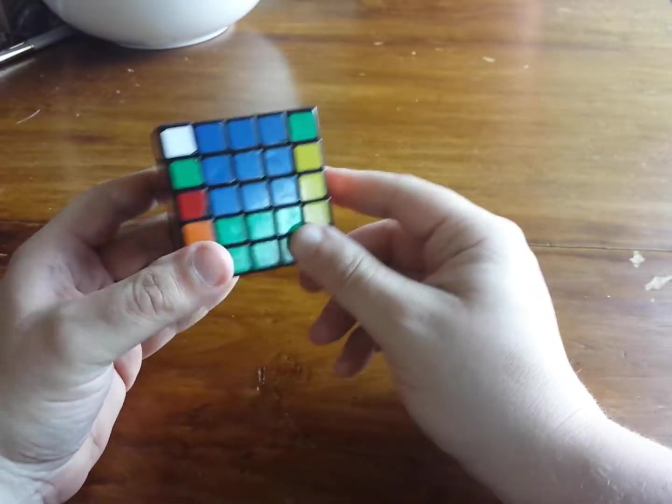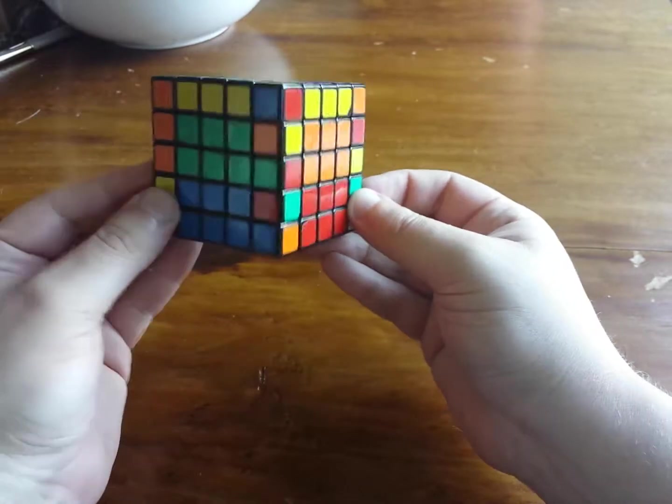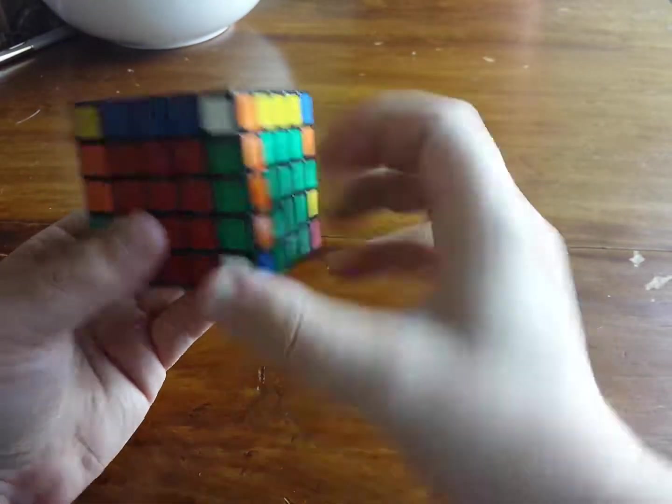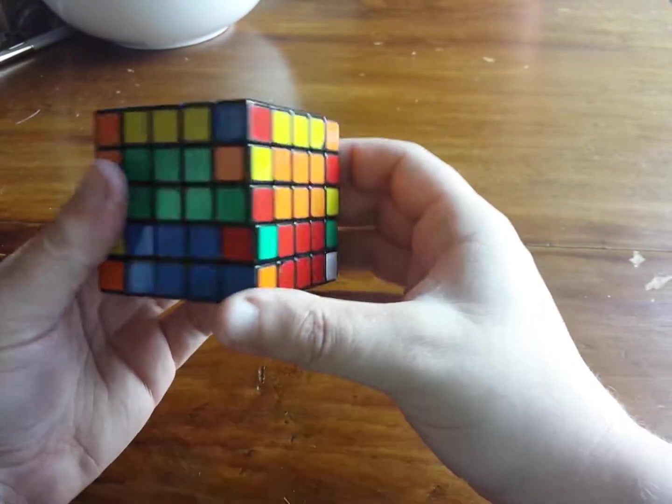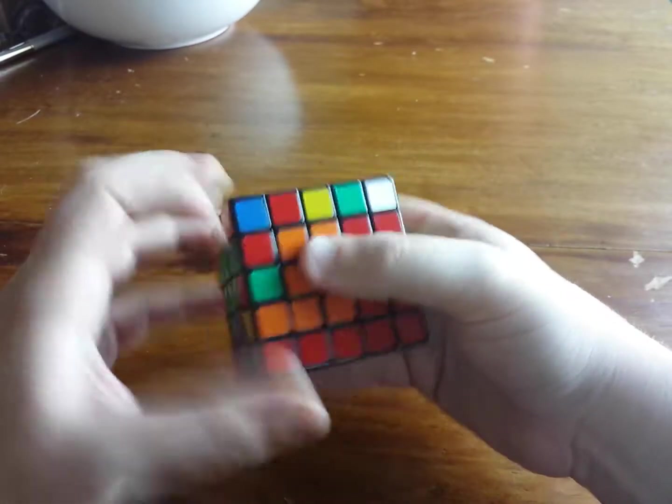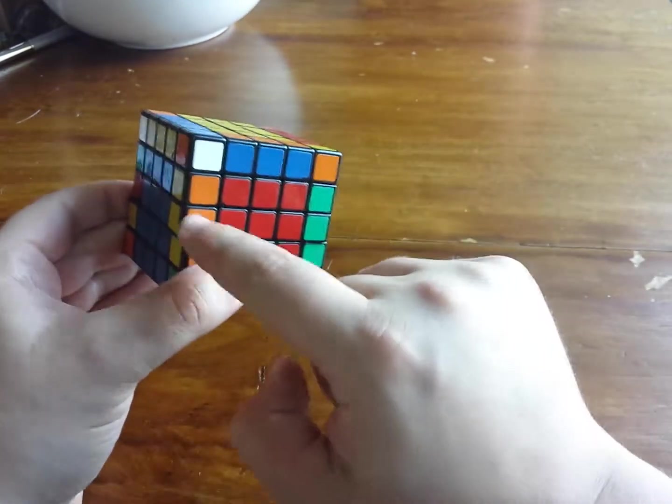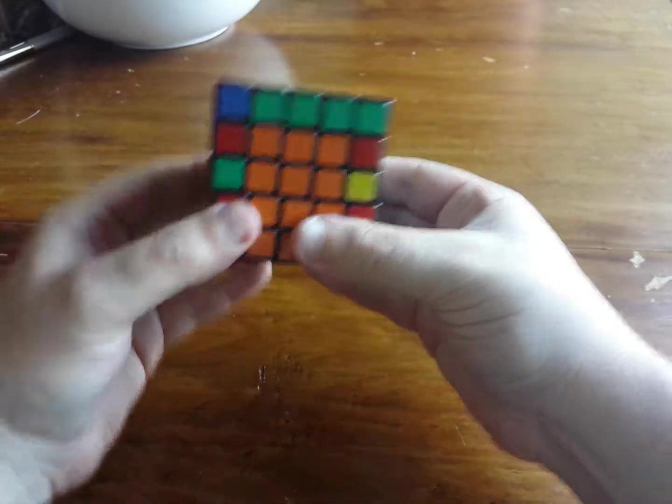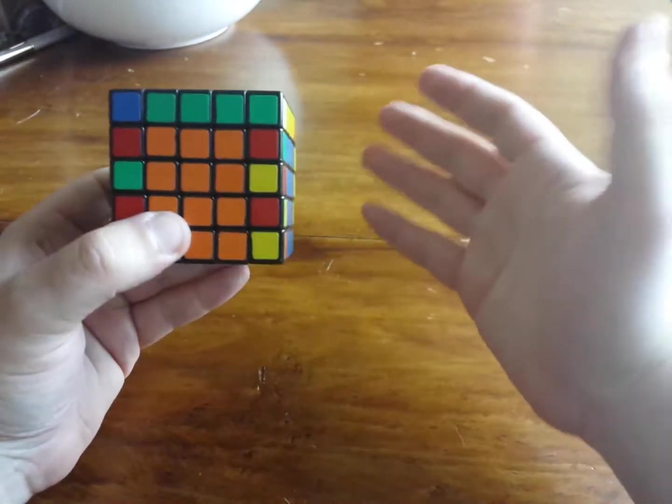And this is like the luckiest case ever. Because if I when I do a U2 it builds that. And if I flip this down. This last yellow orange. It builds that. So immediately it skips two edges. How awesome is that?